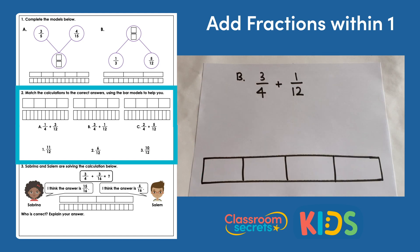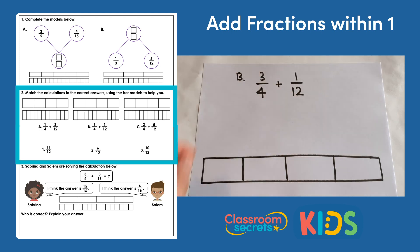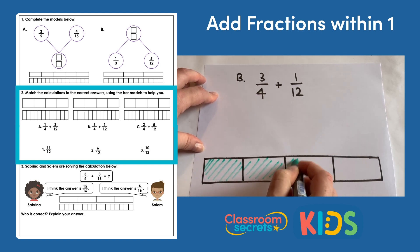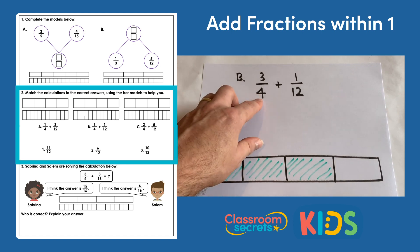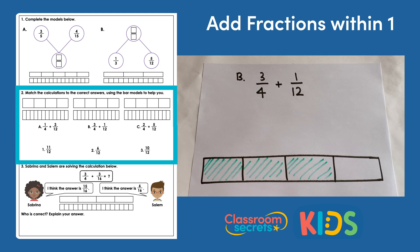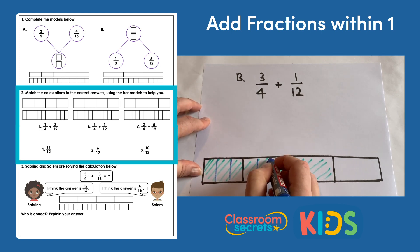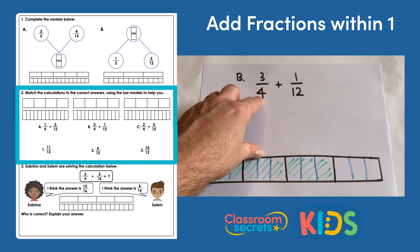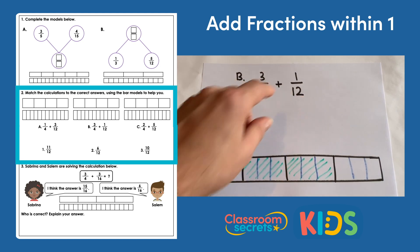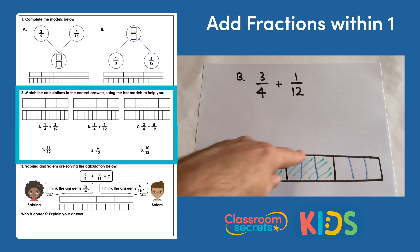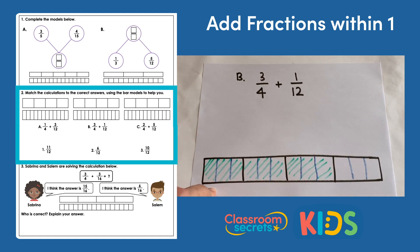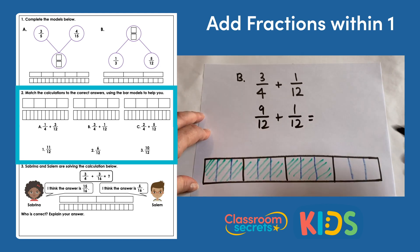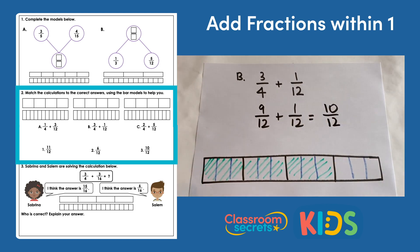B is three quarters add one twelfth. Again, we're going to convert the quarters into twelfths. Here's our bar model with quarters; we're looking at three quarters — three of these four pieces. We convert quarters to twelfths by splitting each quarter into three equal pieces, effectively multiplying four by three to change the denominator to twelve. We're looking at three of these quarters, and we can see we have nine of those twelfths. So three quarters is equivalent to nine twelfths. Nine twelfths add one twelfth means we have ten twelfths — that is answer number three.